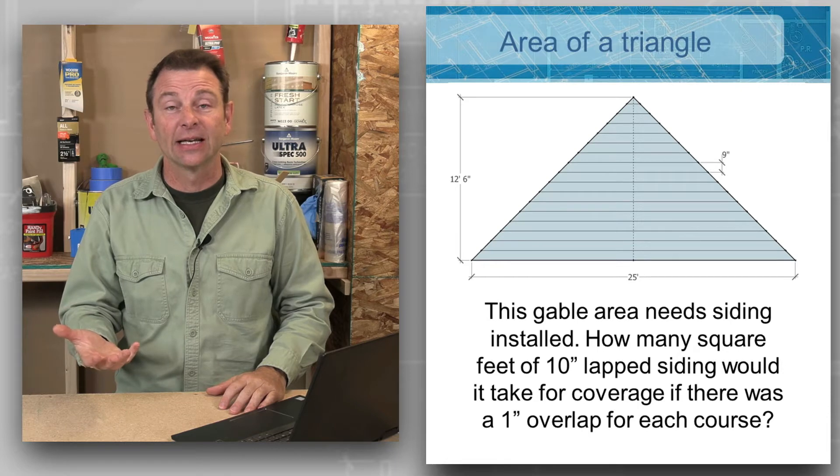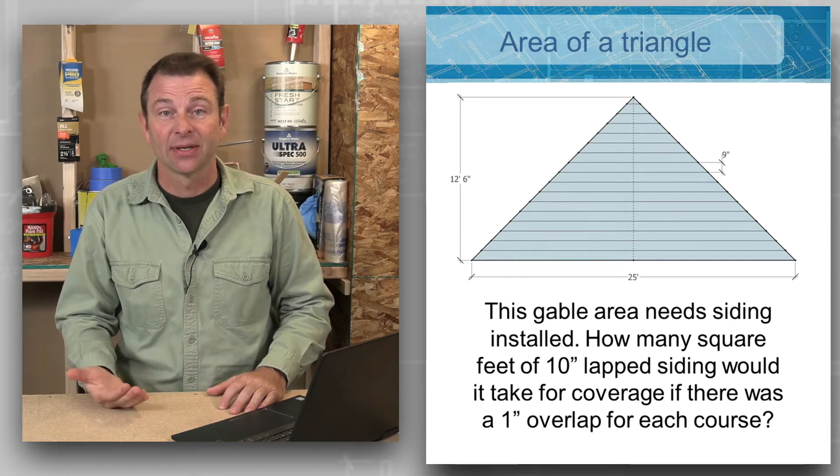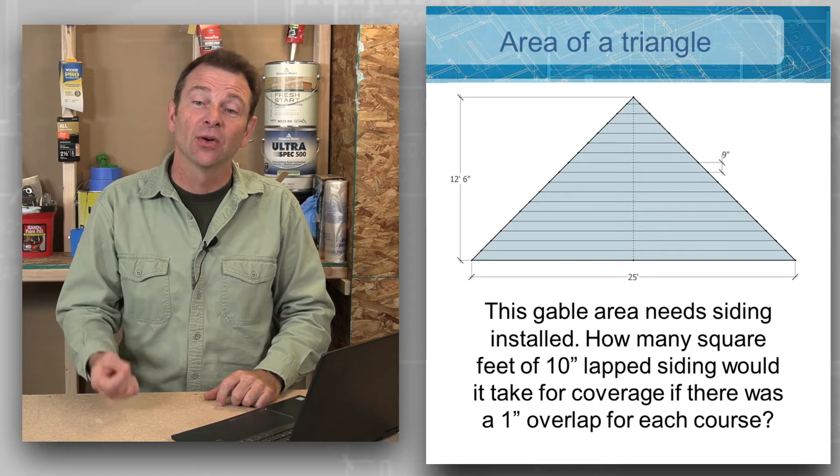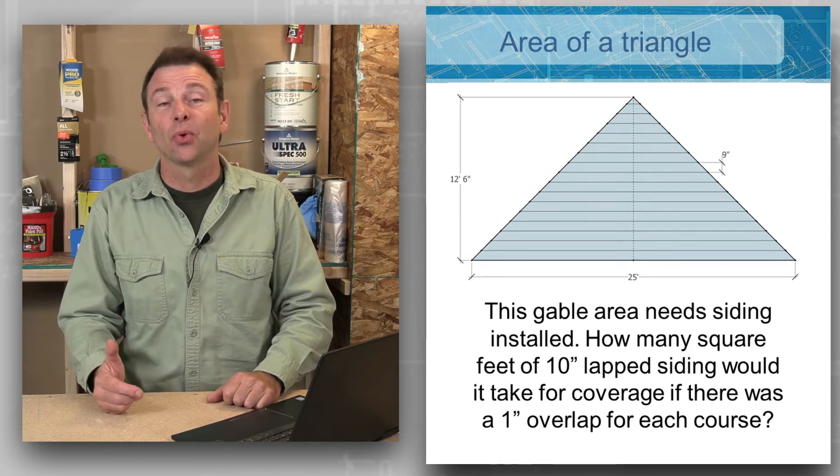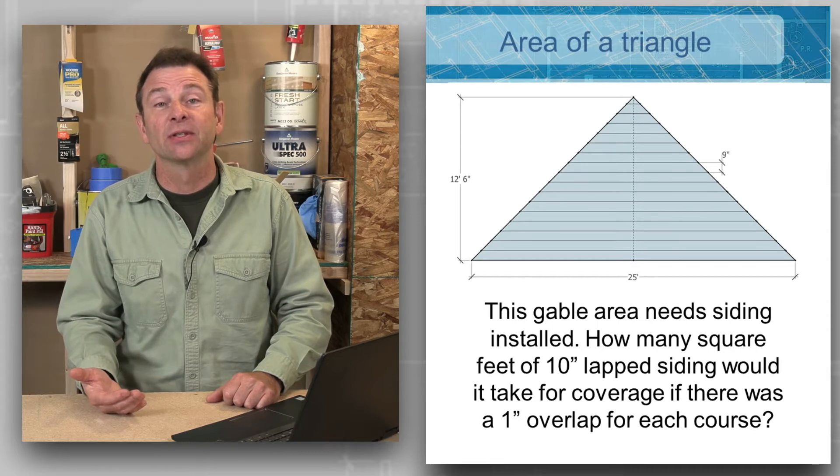This happens to be lap siding, and this lap siding is going to overlap by one inch. This is important when we're calculating our materials because there is a certain percentage of each one of these rows of siding that is going to not show or that's going to be covered by the next row.